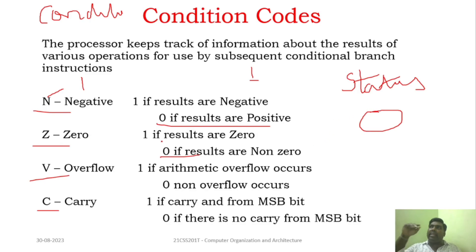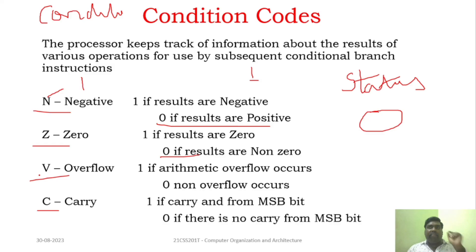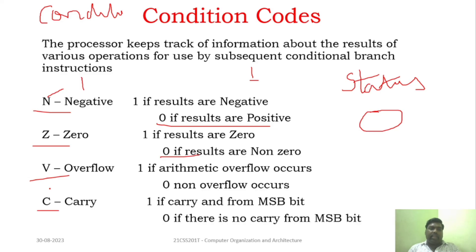When performing an arithmetic operation, if there is overflow, the V flag will be set. And while performing arithmetic operations, if there is carry involved in pointing operations of data, then the C flag will be enabled. So, using these flags, the results can be tracked by the processor.